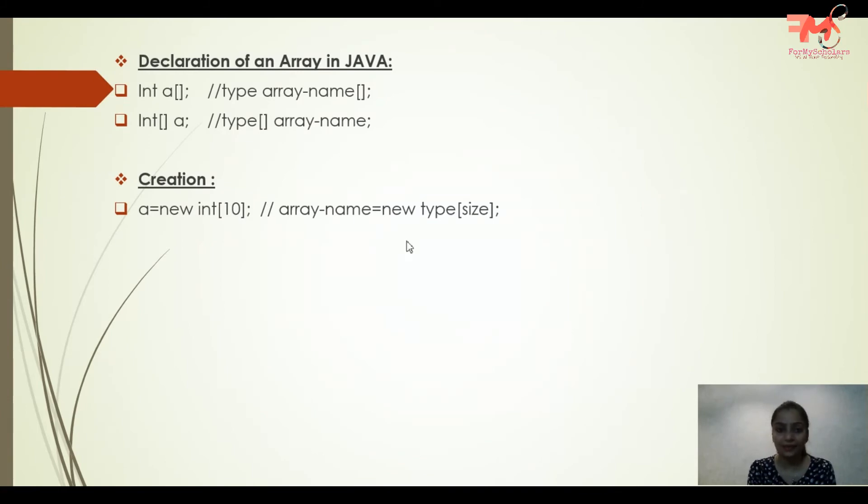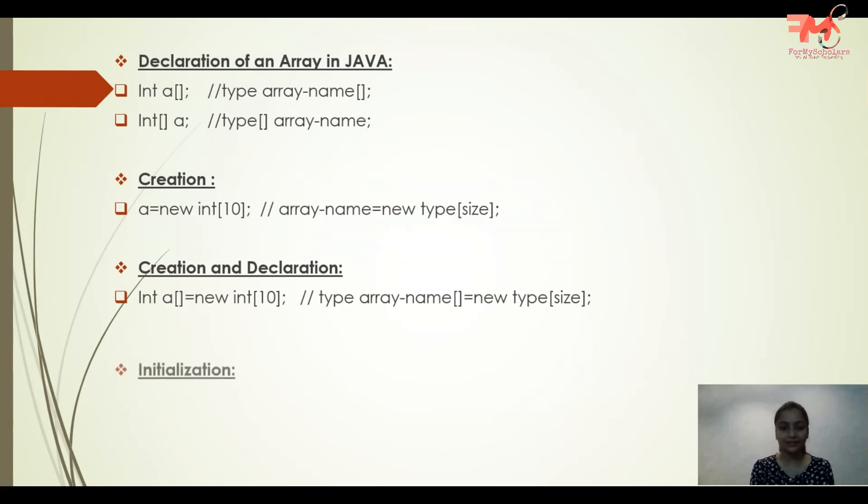Next is creation and declaration. If you want to do creation and declaration both together, you can do it like this: int a[] = new int[size]. The difference is here you give its type and also put square brackets.